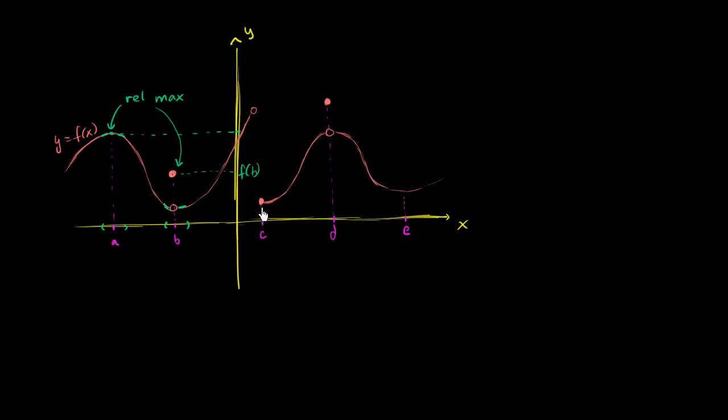Now what about c right here? Well, if this was just at the bottom of a curve, if it looked like e—e is your classic relative minimum point. But c, look, there's this discontinuity. What's going on here?